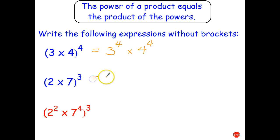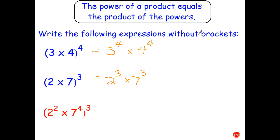Similarly, down here I've got two squared times seven to the power of four, all to the power of three. This one's in red because it's actually a bit more complicated. Try that one on your own, and once you've written it without the brackets, then simplify it.